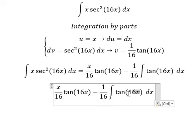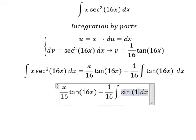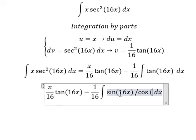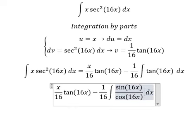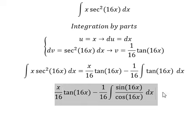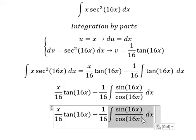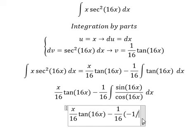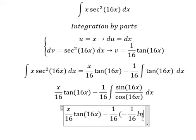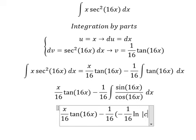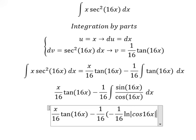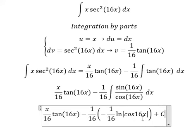For this one we change tan to sin of 16x over cosine of 16x. So the integration of this one, we will have negative 1 over 16 ln of the absolute value of cosine 16x, and we put C in here.